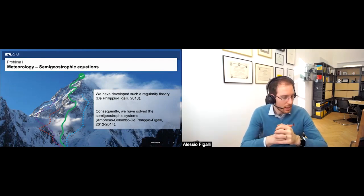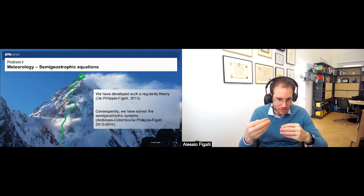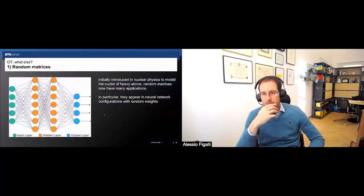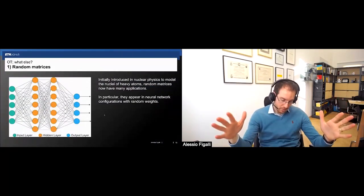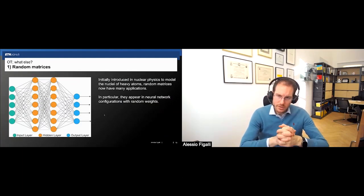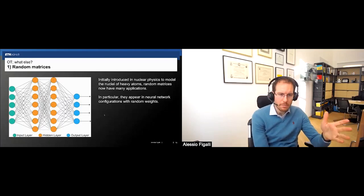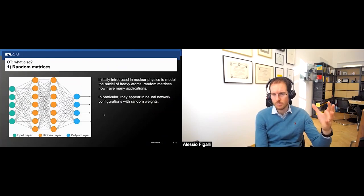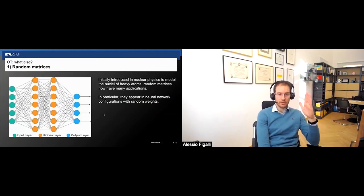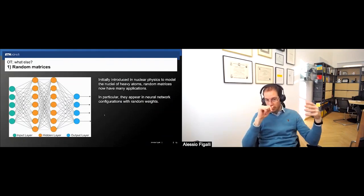Now I would like to mention another problem with applications to machine learning: random matrices. Random matrices are essentially huge matrices where the coefficients are random — you don't know the exact coefficients, there is probability involved. They were introduced in nuclear physics in the 1950s, but now they appear a lot in machine learning. A very important tool in machine learning is a neural network, usually depicted as a layered structure: an input layer, hidden layers, and an output layer.